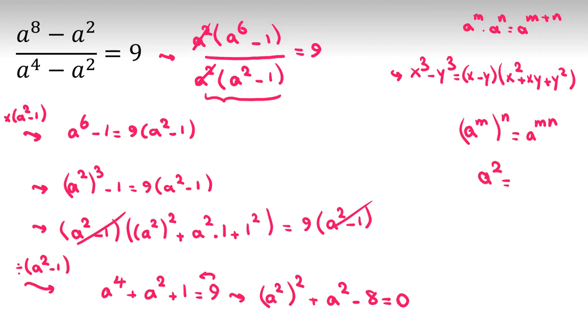If we consider a squared as b, it will be b squared plus b minus 8. Let's consider it as x. It will be x squared plus x minus 8 equals 0.